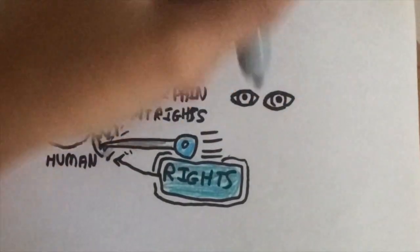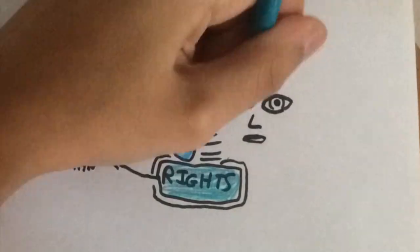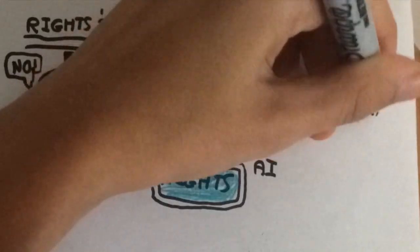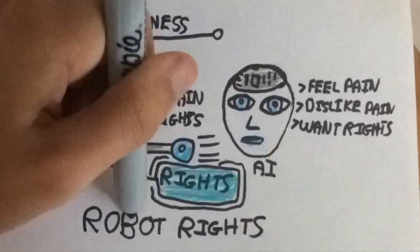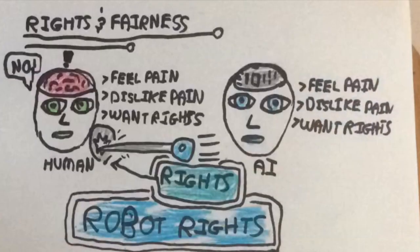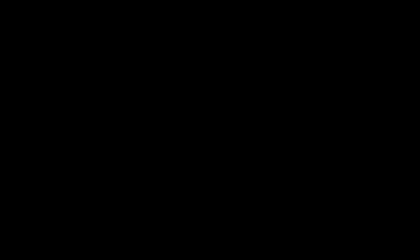and prevent us from feeling unnecessary pain. But what if something inhuman reached a level of sophistication that would make it want rights? What if artificial intelligence could feel pain? What if robots wanted rights?